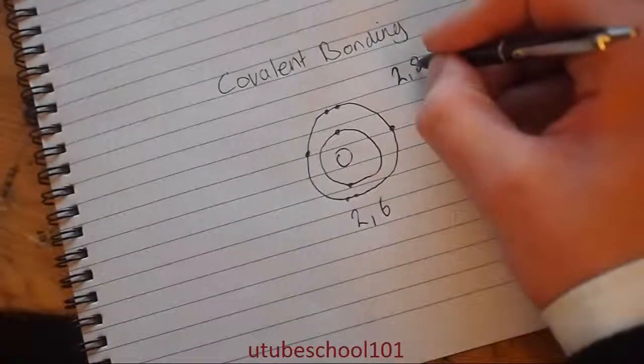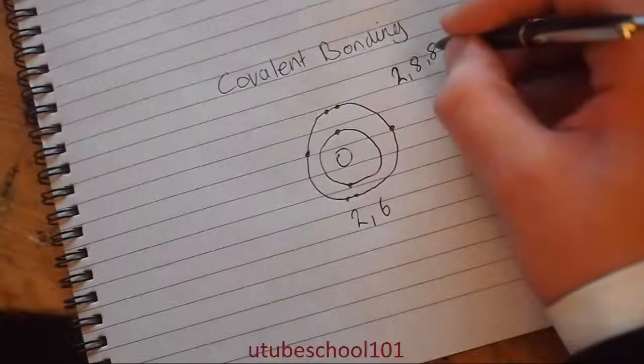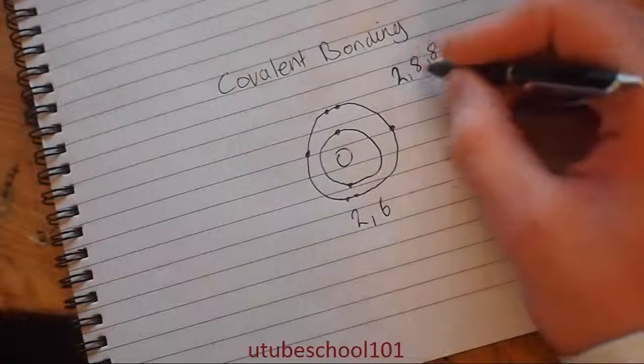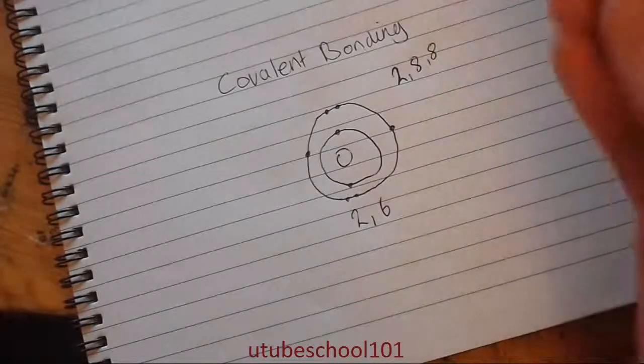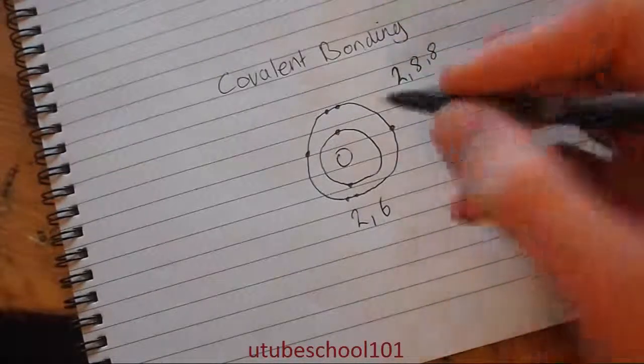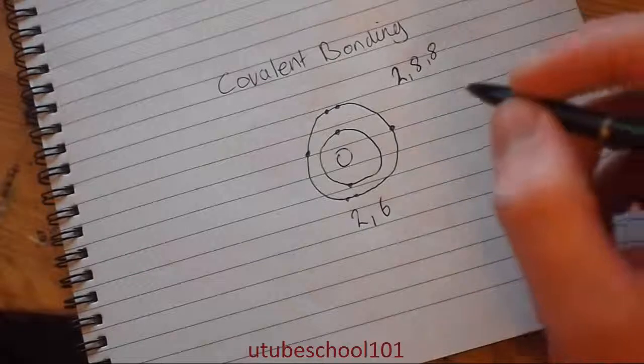In the second layer it has eight electrons. In the third layer it is also eight. And these fill up in order. Once you go past four, they do not fill up in order. But that's a lot more complicated, so I may produce some more advanced videos on that.